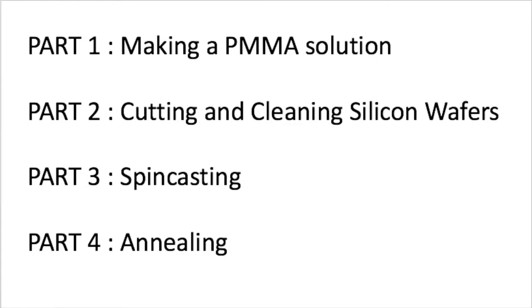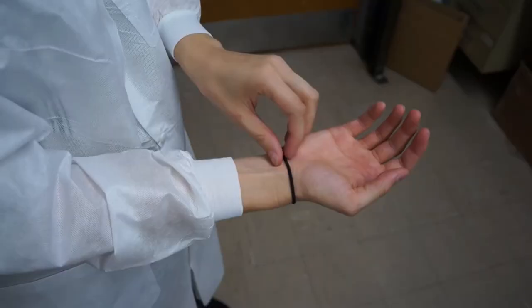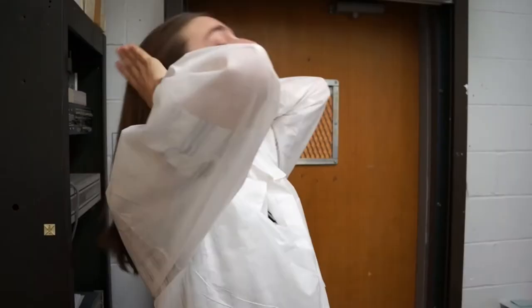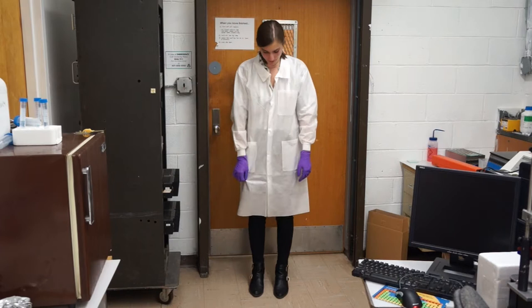But first let's talk about personal protective equipment. For lab safety, you will need the following. First, if you have long hair, you should tie it back with a hair tie. Of course, you'll need gloves, and lastly, a lab coat, making sure that you are wearing long pants and closed shoes.